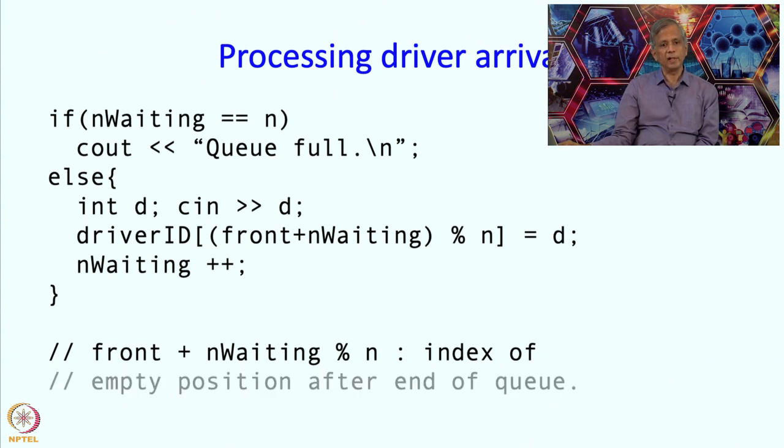So front plus nWaiting mod n is the index of the empty position after the end of the queue. So this is just a reminder as to why we use this over here, we had discussed this earlier that this is the position where the next driver should go.